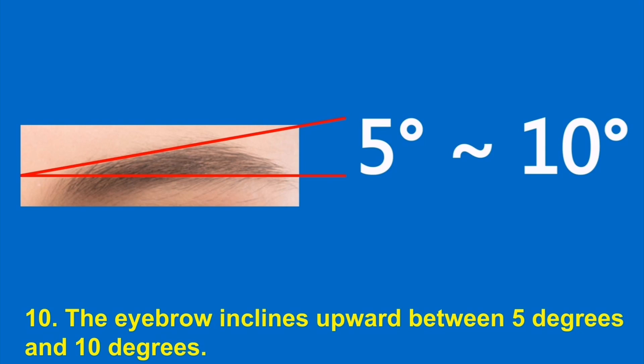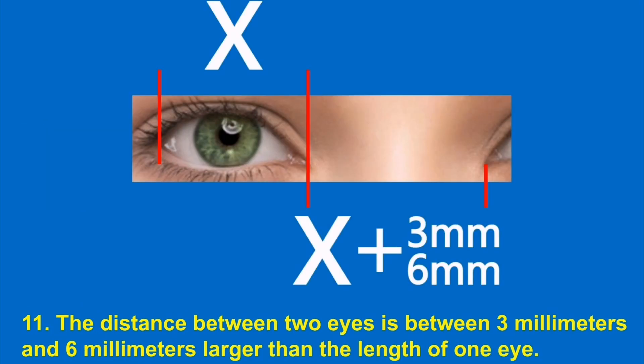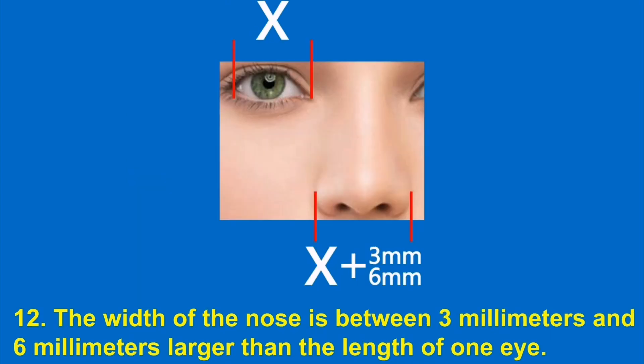10. The eyebrow inclines upward between 5 degrees and 10 degrees. 11. The distance between two eyes is between 3 millimeters and 6 millimeters larger than the length of one eye. 12. The width of the nose is between 3 millimeters and 6 millimeters larger than the length of one eye.